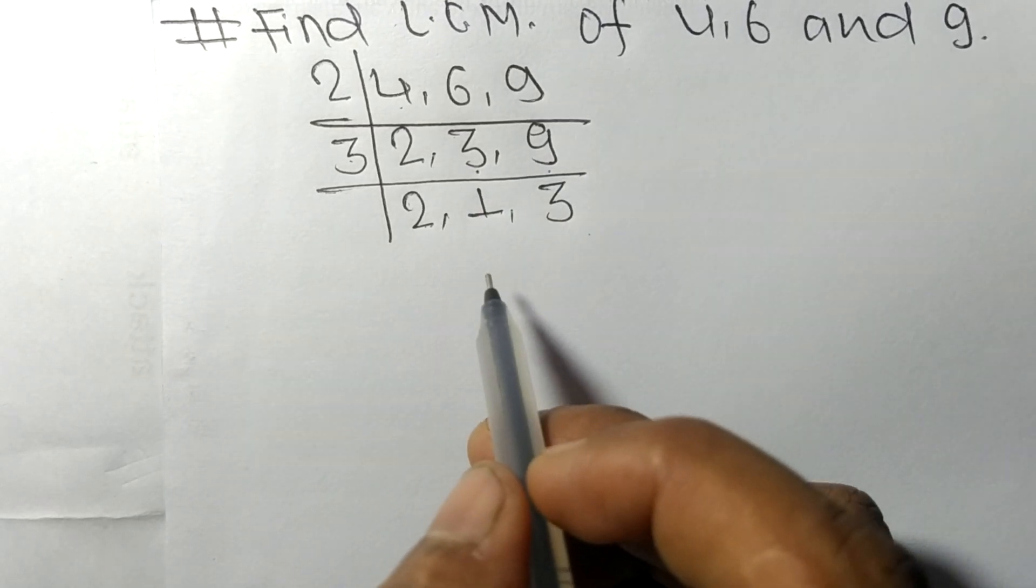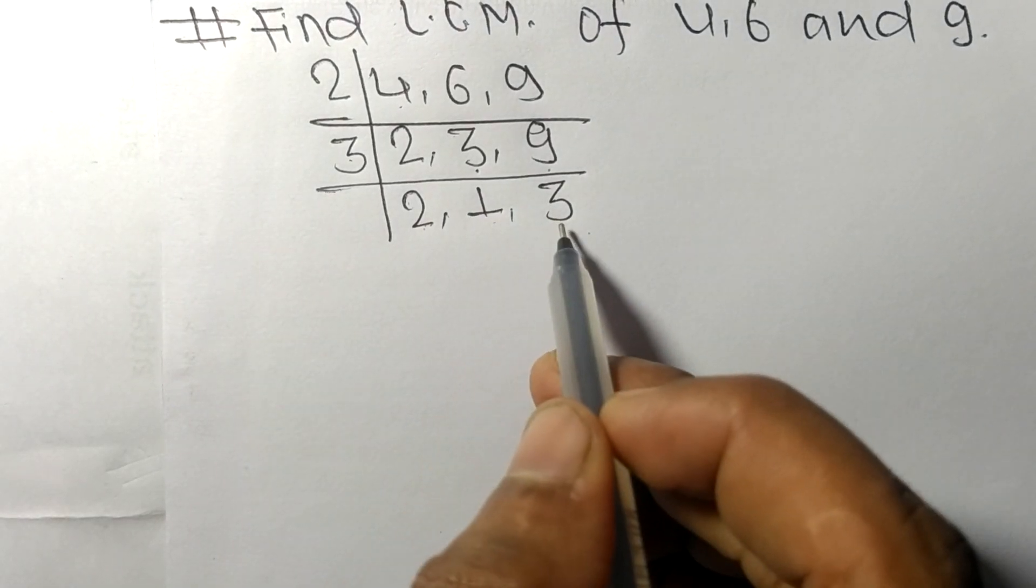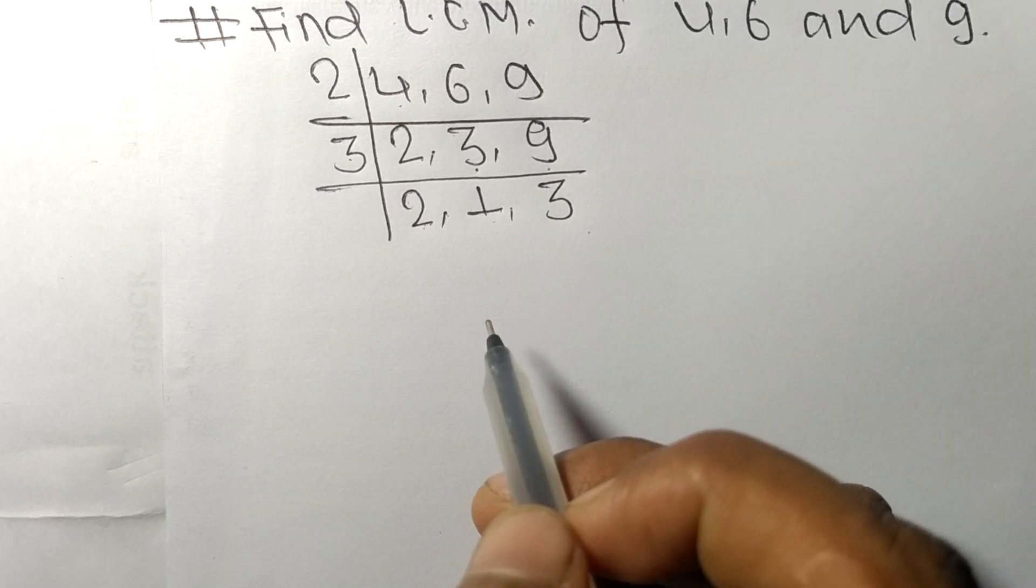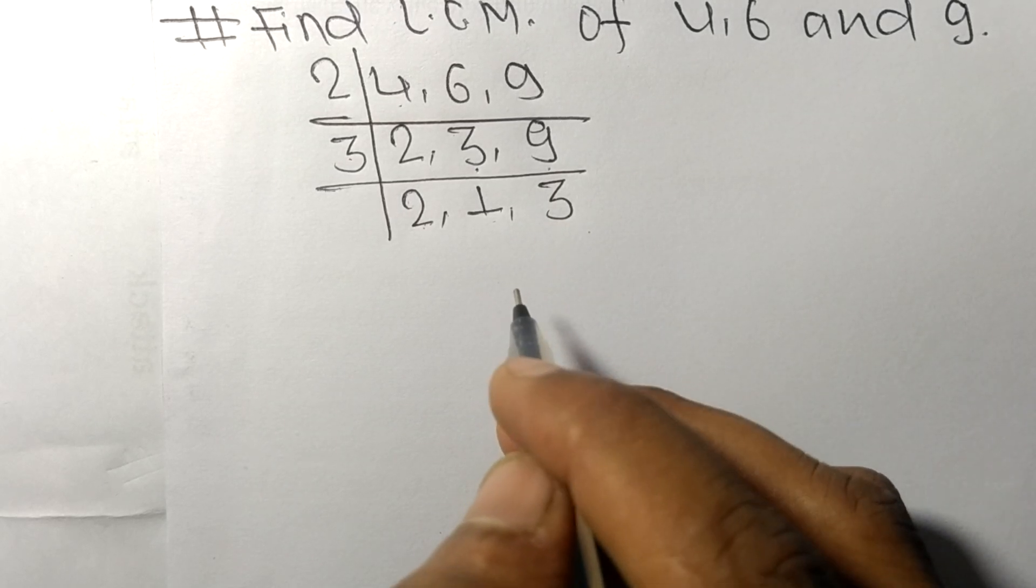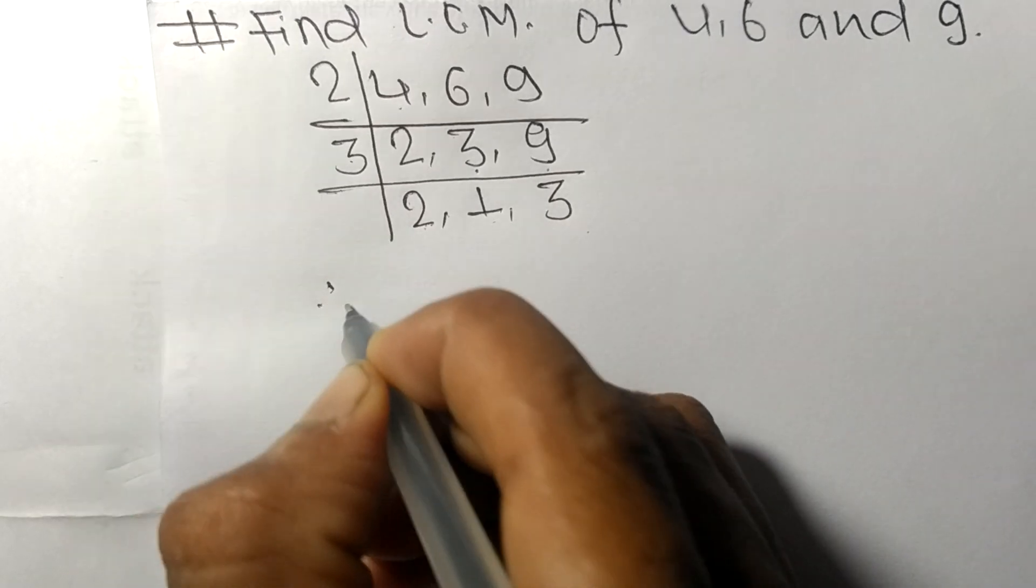So now we got 2, 1, and 3 which are not exactly divisible by same number. Therefore...